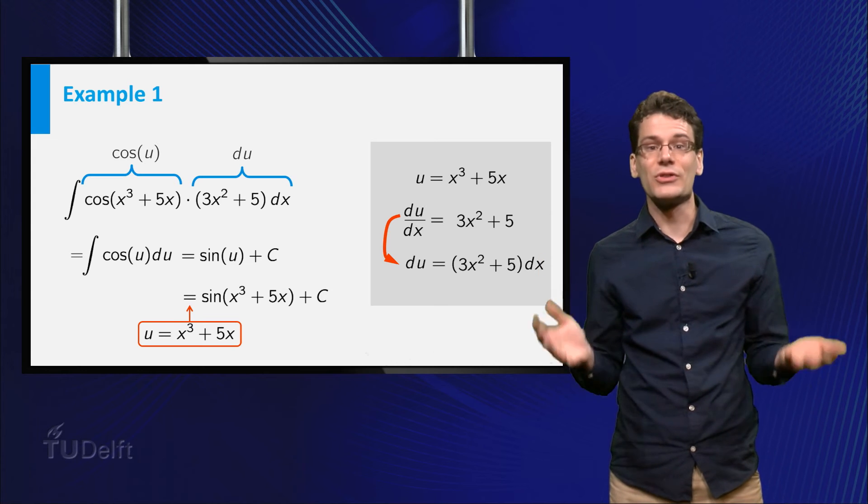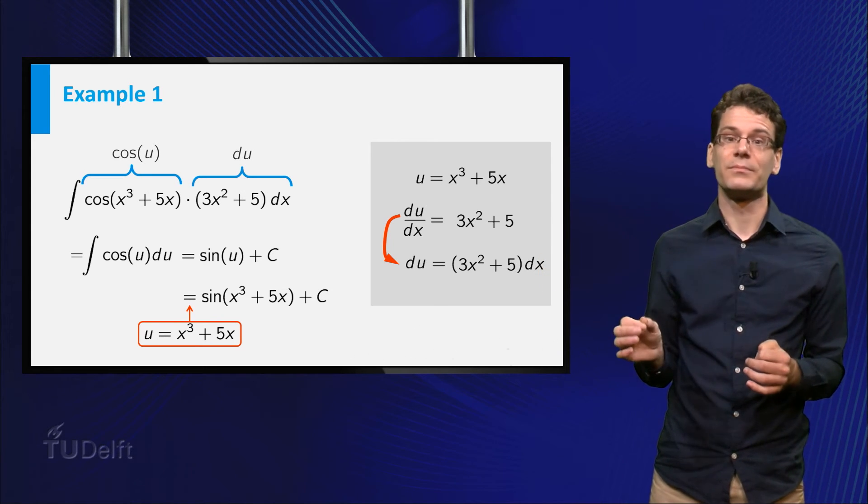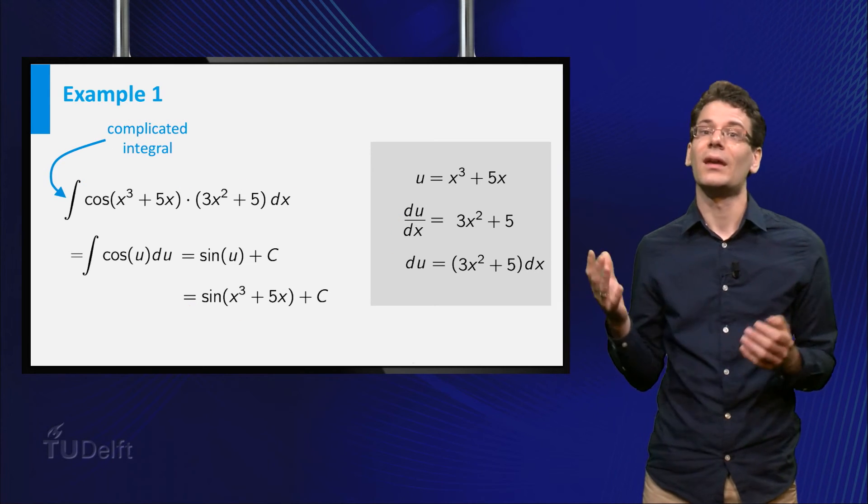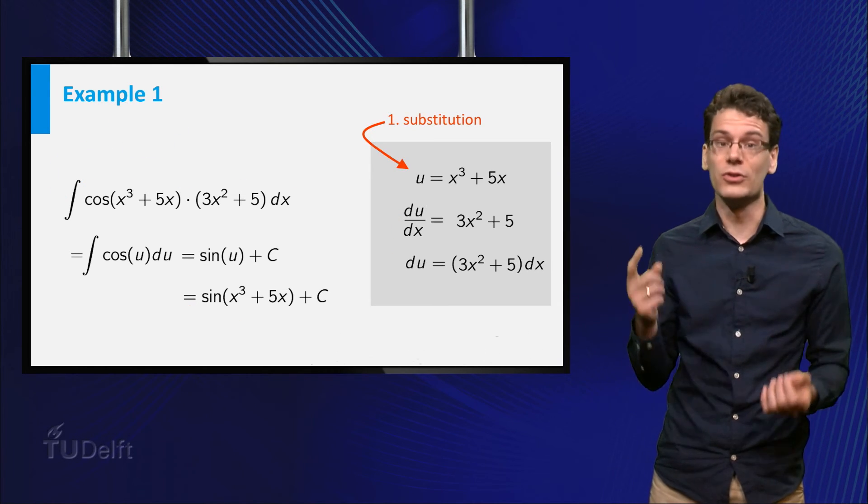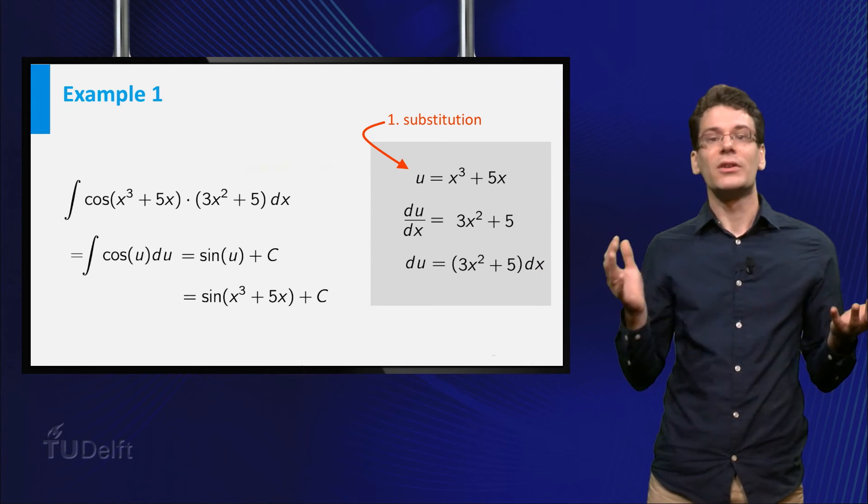What we used here is the so-called method of substitution. Let me summarize the steps. We start with a complicated integral. Then we choose a substitution, a new variable u related to the old variable x.